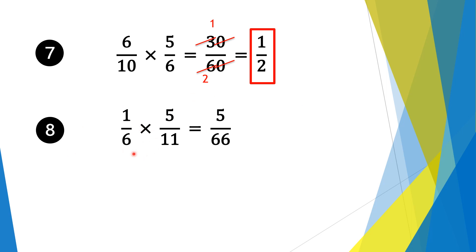Moving on to question 8. We have 1/6 times 5/11. So we multiply the numerators first: 1 times 5 is 5. And we multiply the denominators after: 6 times 11 is 66. So our solution is 5 over 66.